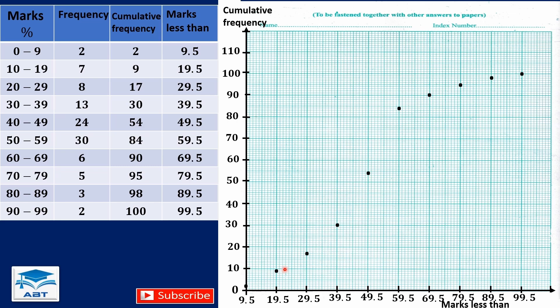Finally, we have max less than 99.5 and the cumulative frequency is exactly 100, so we put the point there. If we join all these points with straight lines, then we have a cumulative frequency polygon. But if we join these points with a smooth curve, then we have the cumulative frequency curve, also known as the ogive — and that is what we want.